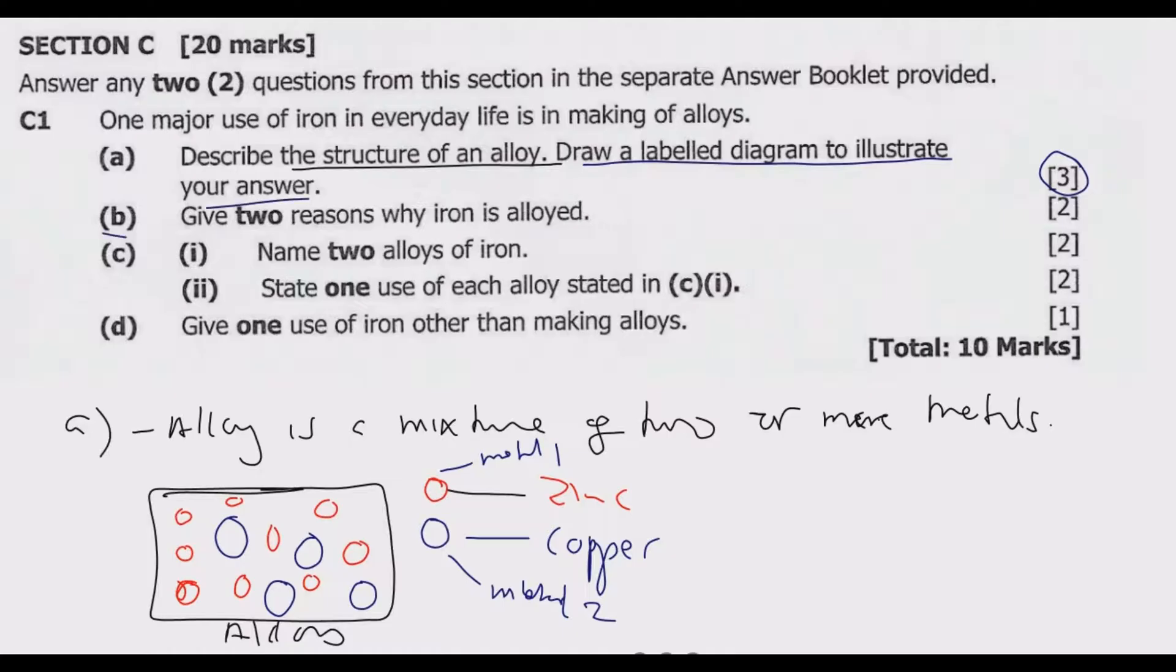Question B, give two reasons why iron is alloyed. What is also critical importance is for you to know that an alloy is a mixture. Don't confuse this with a compound. A compound is a chemical reaction, a mixture of two elements that are chemically bonded. But an alloy, there is no chemical bonding. It's just a mixture of two elements.